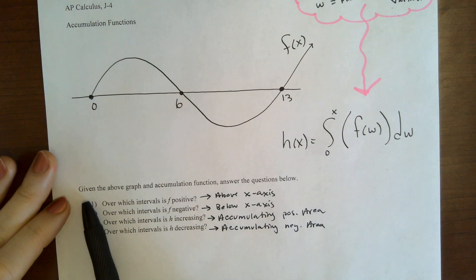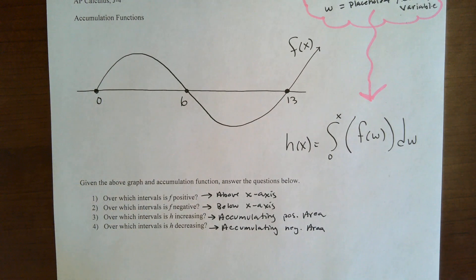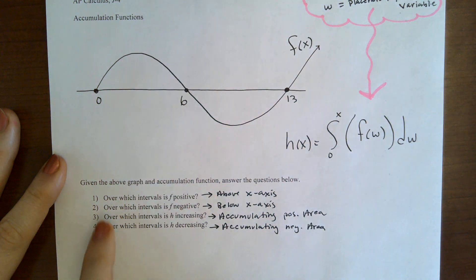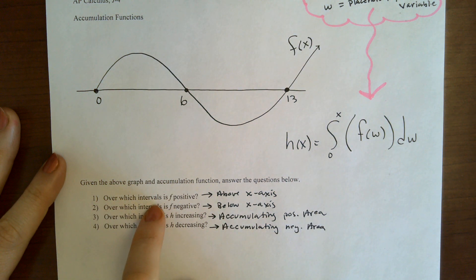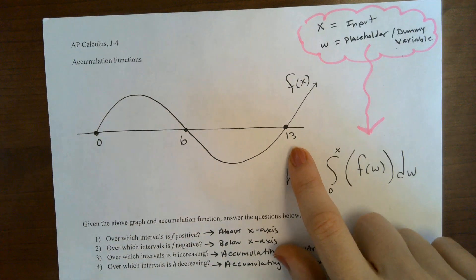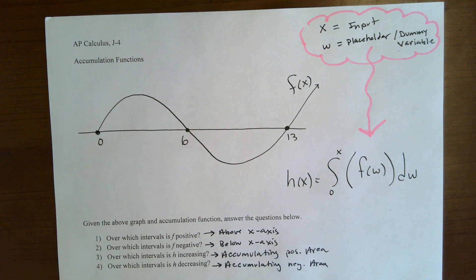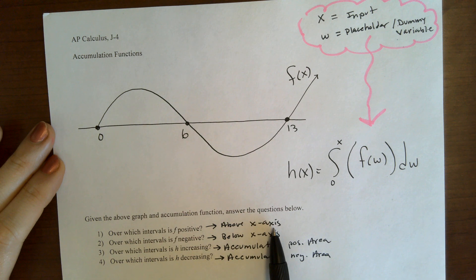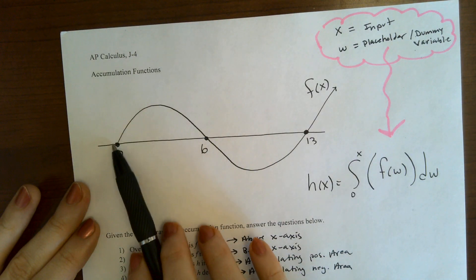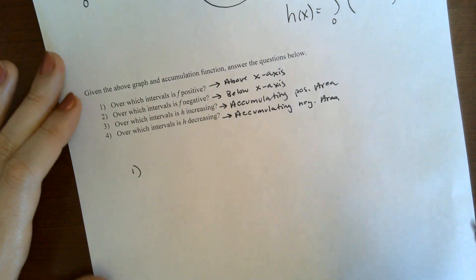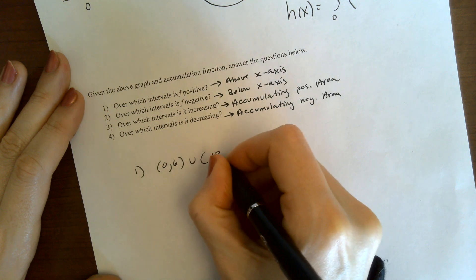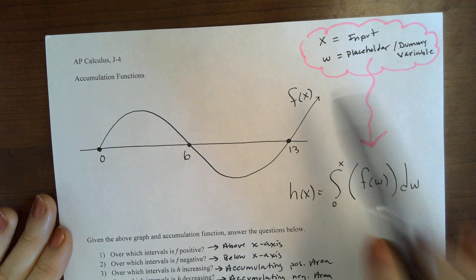All right, now we're going to answer these questions. So given the above graph and accumulation function, answer the questions below. Number one: over which intervals is f positive? This is f — this is the graph of f. So it's going to be positive where it is above the x-axis. The graph of f is above the x-axis from 0 to 6, and also from 13 to infinity.